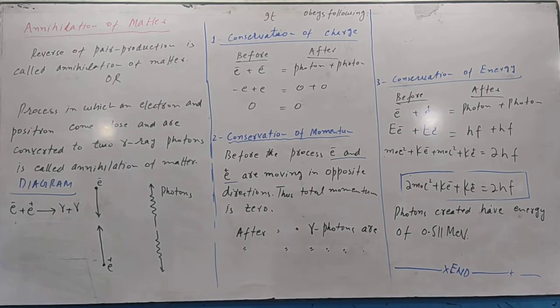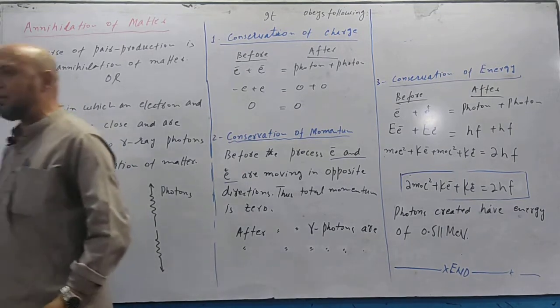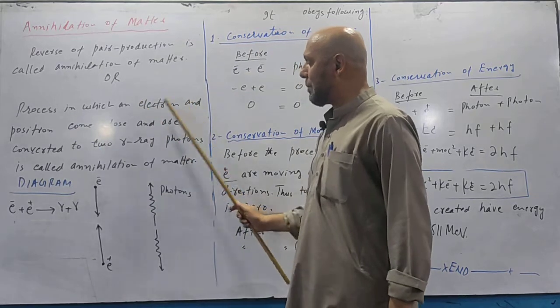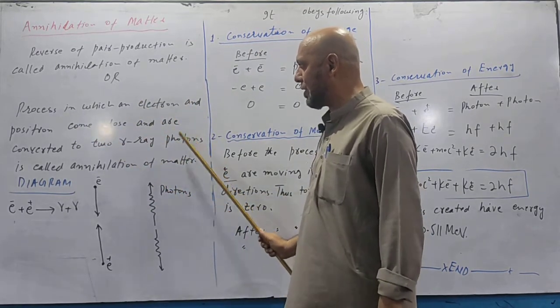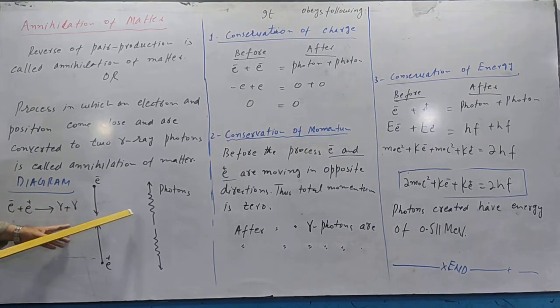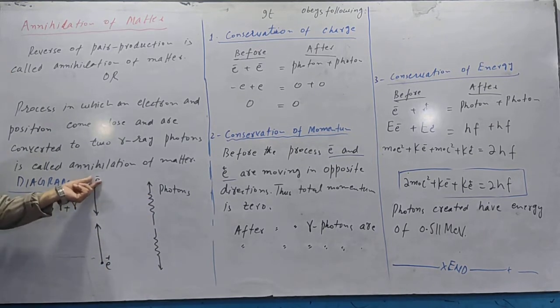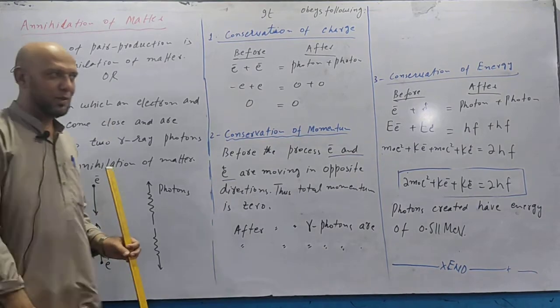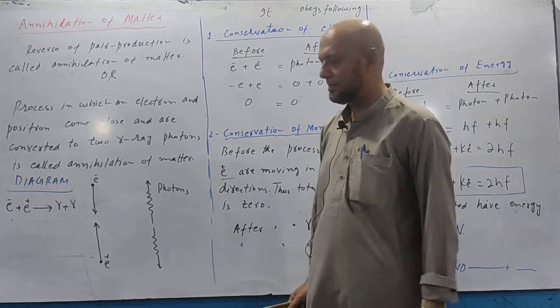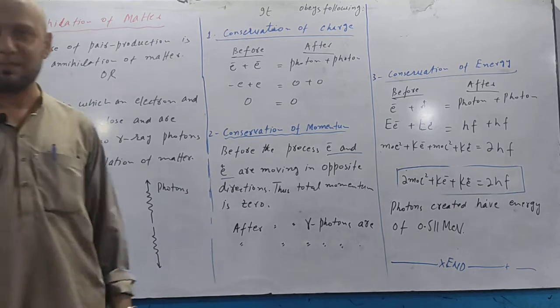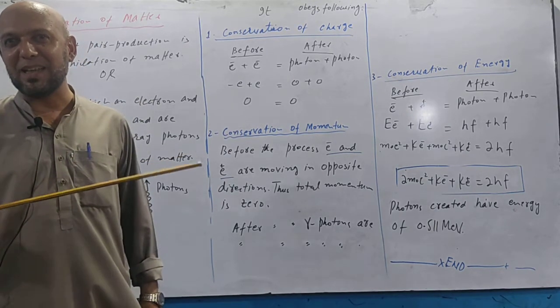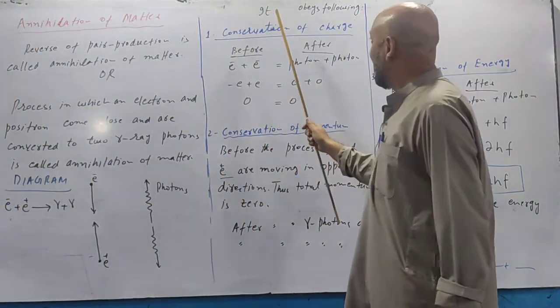The reverse process of pair production or materialization of energy is annihilation of matter. This is its definition: Reverse of pair production is called annihilation of matter. Or, process in which an electron and positron come close and are converted to two gamma ray photons is called annihilation of matter. This is electron and this is positron. When both come near each other, both destroy each other and become two gamma ray photons. Yesterday I explained to you about matter and anti-matter meeting. Both destroyed each other, both became what? Energy. This will also obey laws.